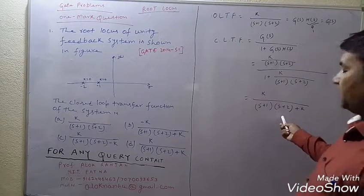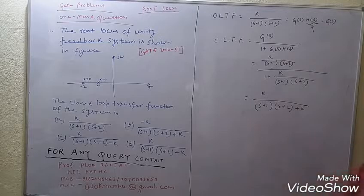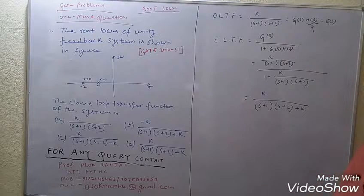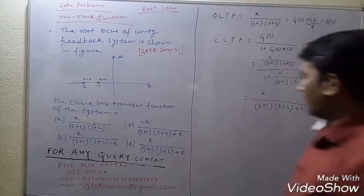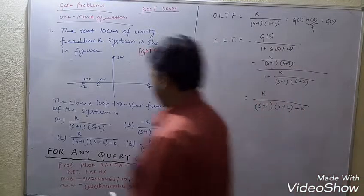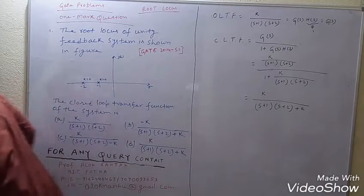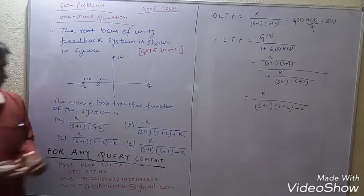That gives its value as K divided by [(s+1)(s+2) + K]. This must be the answer — so our answer is D.